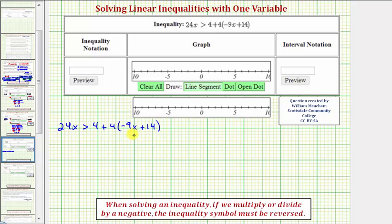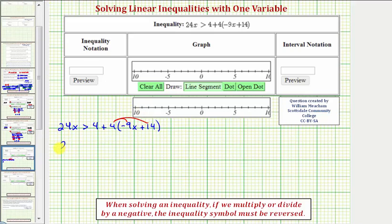So looking at the inequality, our first step will be to clear the parentheses by distributing four. So we'll have 24x is greater than four. Here we're distributing positive four. Four times negative 9x is equal to negative 36x.